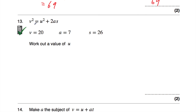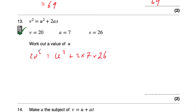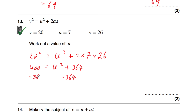Question number 13: v squared equals u squared plus 2as, and we have the values of v, a, and s. We want to work out a value of u. So 20 squared equals u squared plus 2 times 7 times 26. 20 squared is 400, so 400 equals u squared plus 364. We take away 364 from both sides: 400 take away 364 is 36. So u squared equals 36.